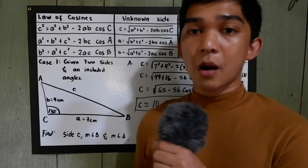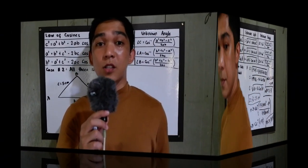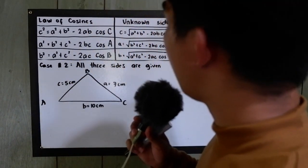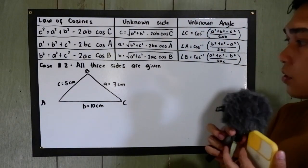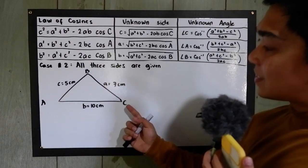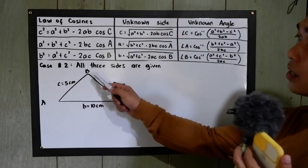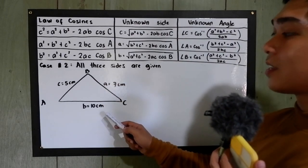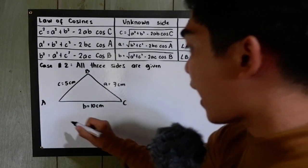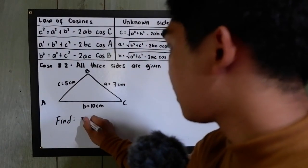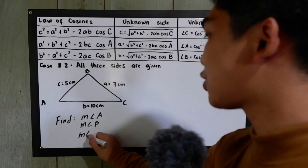Next, our case number two: what if all the sides are given? We have an oblique triangle with side a equal to 7 centimeters, side b equal to 10 centimeters, and side c equal to 5 centimeters. We're going to find the measure of angle A, measure of angle B, and measure of angle C.